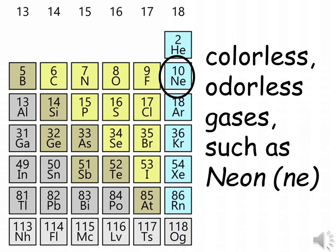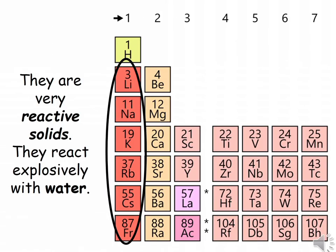Elements in the same group have similar properties. For example, all elements in Group 18 are colorless, odorless gases, such as neon. In contrast, all elements in Group 1 are very reactive solids. They react explosively with water.